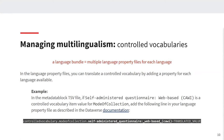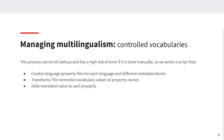For example, in the metadata block TSV file, if 'self-administered questionnaire web-based' is a controlled vocabulary item value for mode of collection, you will need to add the corresponding line in the language property file. You have to be careful with the name of the property, because the only name that will work is the name of the value in the TSV file, for which you have to strip accents and replace spaces with underscores. Because this is tedious and error-prone, we wrote a script that can create language property files for each language and metadata block, transform TSV controlled vocabulary values to property names, and then add translated values to each property.